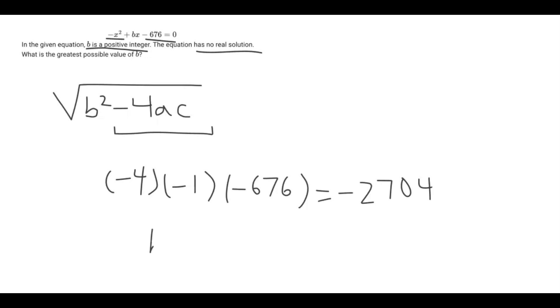So what we can do is just set B squared equivalent to 2,704. Not negative 2,704, because this has to be a positive value in order to be subtracted.